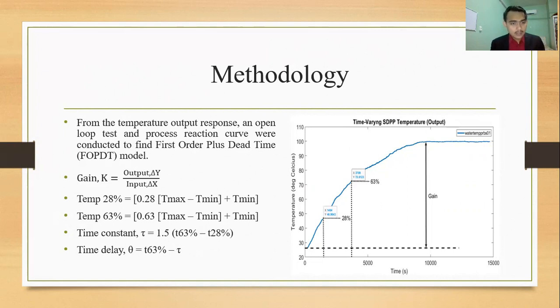So then, we follow by to find the temperature at 28% and 63%, which is 0.28 or 0.63, multiply with the highest temperature minus the lowest temperature, then plus with the lowest temperature.